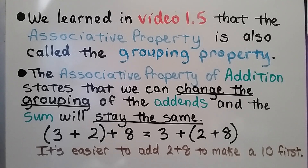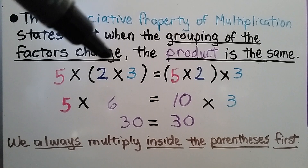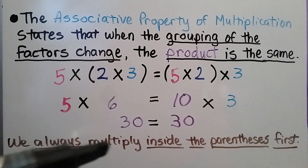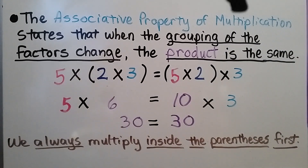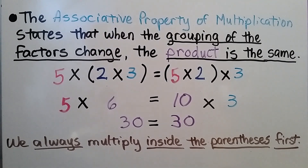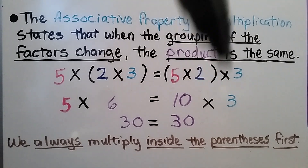The associative property of multiplication states that when the grouping of the factors changes, the product is the same. We can multiply 2 times 3, which is 6, and then multiply by 5 — that's 30. Or we can multiply 5 times 2 first, which is 10, then multiply by 3, which is 30. We always multiply inside the parentheses first, but it might be easier to make a ten first and then multiply by three.